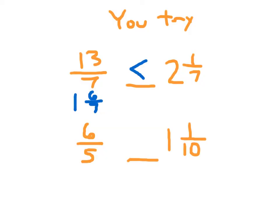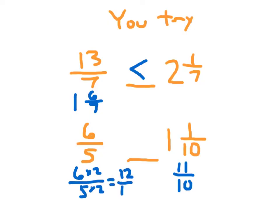For the second problem: 6 fifths versus 1 and 1 tenth. I'll use improper fractions. 1 and 1 tenth becomes 11 tenths, because each whole is worth 10 tenths, plus 1 tenth is 11 tenths. For 6 fifths, I multiply numerator and denominator by 2 to get 12 tenths. Now I'm comparing 12 tenths with 11 tenths. 12 is greater than 11, so 6 fifths is greater than 1 and 1 tenth.